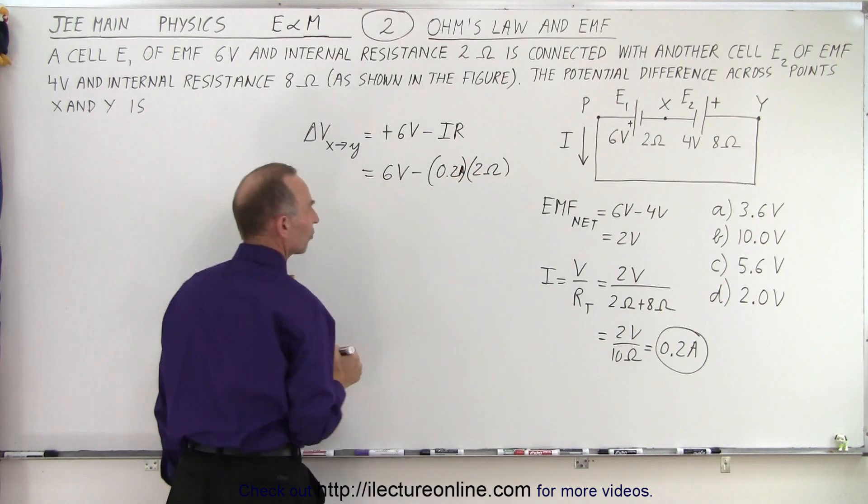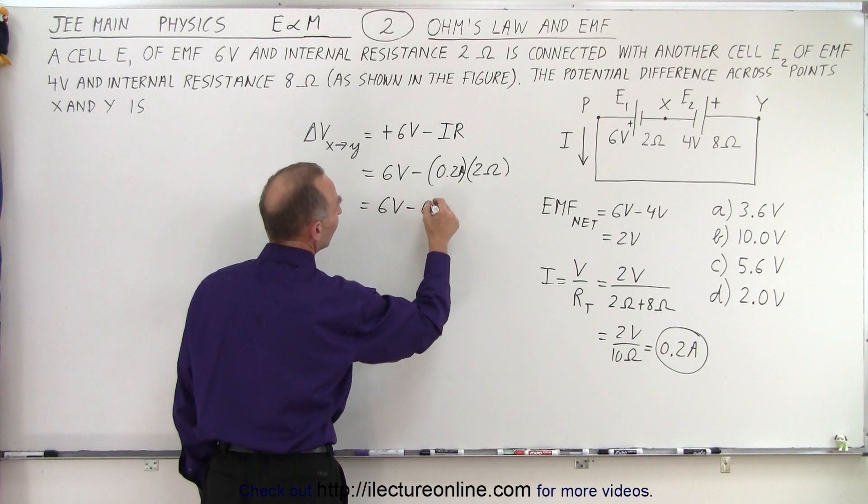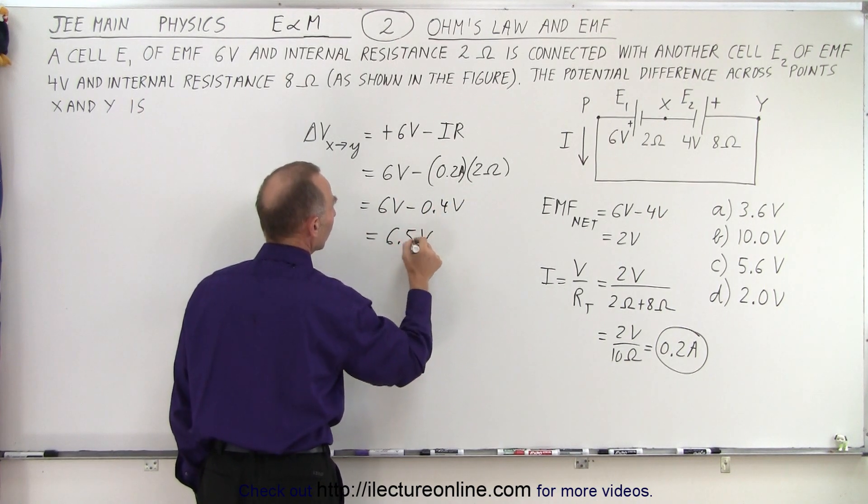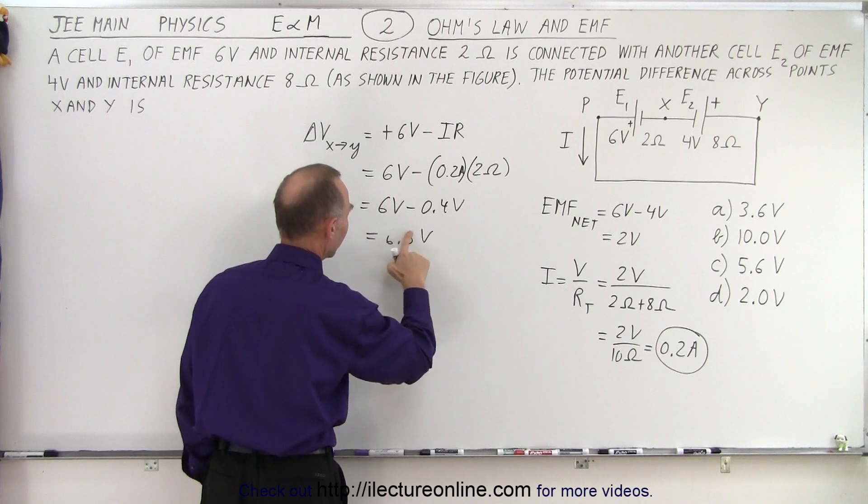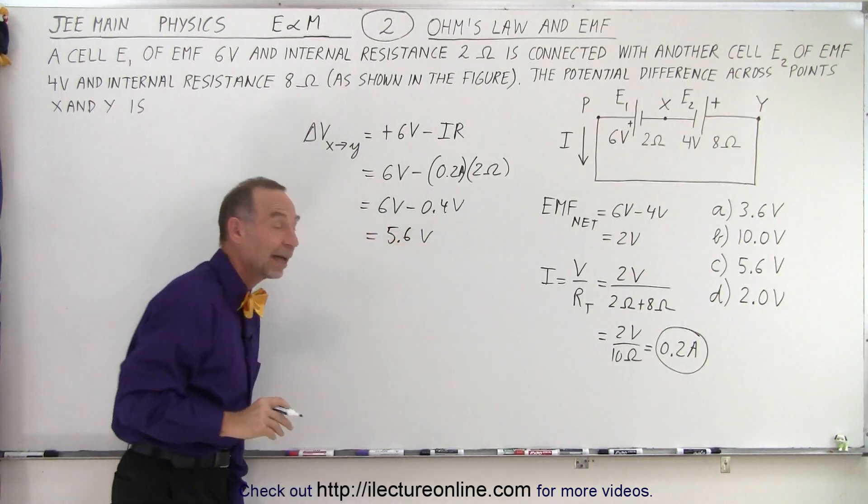So this would be equal to 6 volts minus I which is 0.2 times R which is 2 ohms, and so we get 6 volts minus 0.4 volts which is, not 6.5, 5.6 volts, I got those turned around.